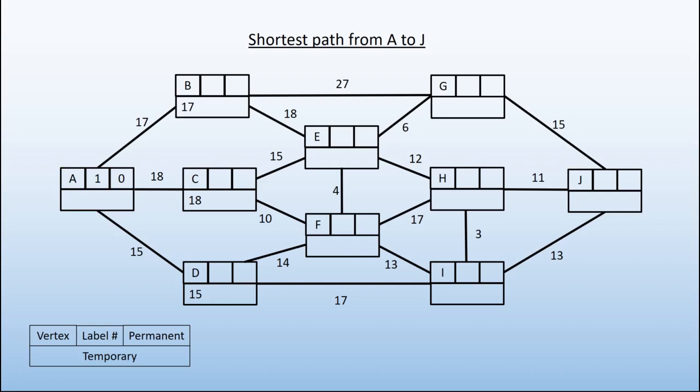We then stop looking at A. That one has been permanently labelled, and so we look for the vertex that has the smallest temporary label. In this case it is D with 15. So we give that a number label. This is the second vertex we are working on, and we make its temporary label into the permanent label. What we're saying when we do that is it is not possible to get to D in a shorter distance than 15 from A.